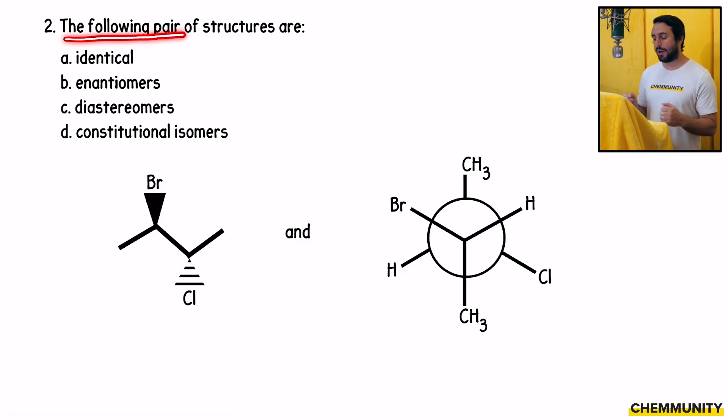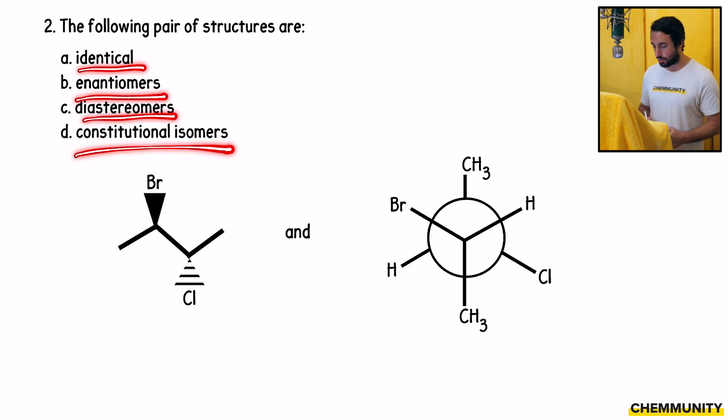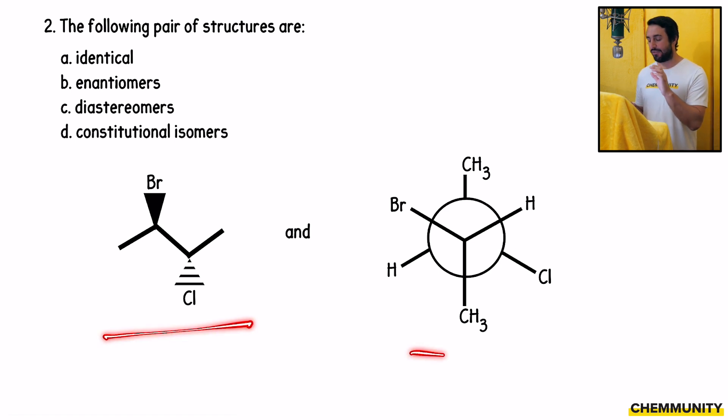Number two, the following pair of structures are - and again we have these options: identical, enantiomers, diastereomers, and constitutional isomers. We want to compare these structures in the same way. We have something in line notation and then we have a Newman projection. You can go either way. We could convert the line notation to a Newman projection, but I think we're used to looking at molecules in line notation, so why don't we go ahead and convert the Newman projection to line notation.